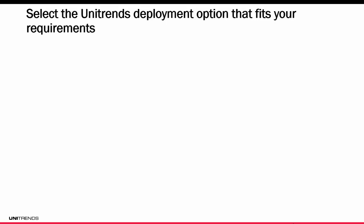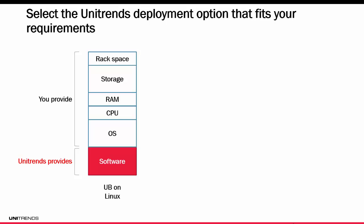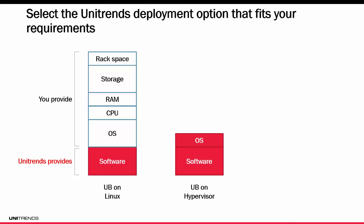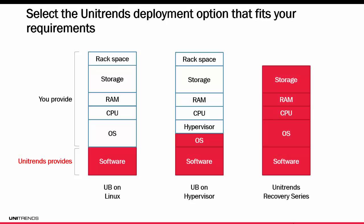To figure out which deployment is best for your environment, it breaks down to what you provide and what Unitrends provides. For Unitrends Backup on Linux, Unitrends provides only the software — you acquire the licensing and provide the OS, CPU, RAM, storage, rack space, and the physical server itself. For UB on a hypervisor — whether VMware, Hyper-V, or Linux — Unitrends provides a deployable template such as an OVA or OVF for VMware, and you need to provide the virtual host and the backup storage. If you want Unitrends to provide the storage, processing, and software, the Unitrends Recovery Series is the right fit — all you need to provide is space for the device in your environment.